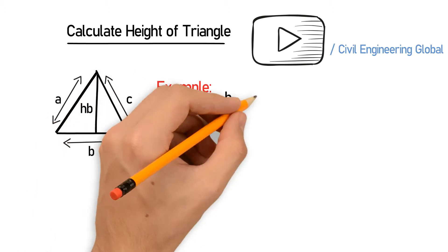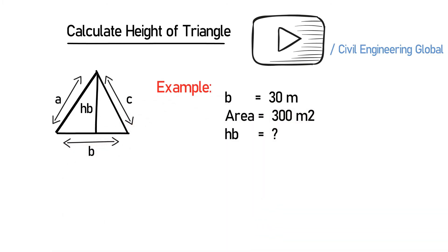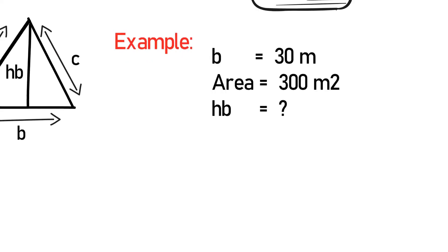B is equal to 30 meter, area is equal to 300 meter square, HB is equal to unknown. So we have to calculate the height of the triangle which is HB. So we will use the following formula as we know.